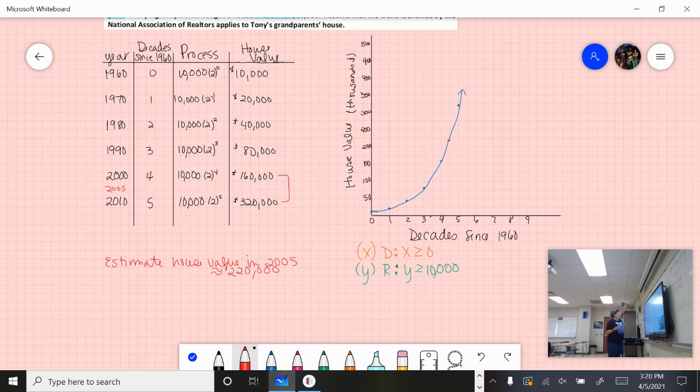Now remember, I said we could write our equation based off of what we have in our process column. We've kind of already done that. Really, all we have to do is just throw some variables in there. So instead of 2 to a specific number, we're just going to say 2 to the x power. So our equation is y = 10,000 times 2 to the x power.